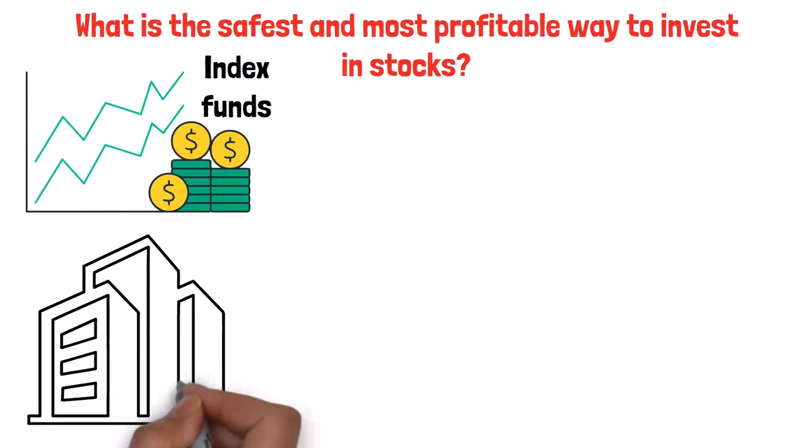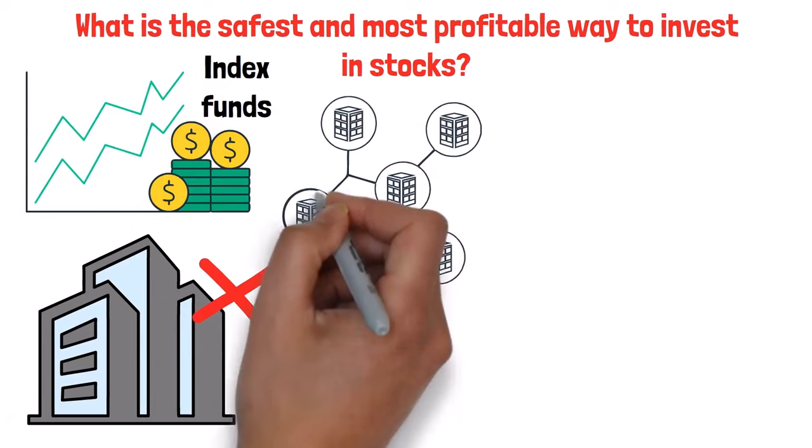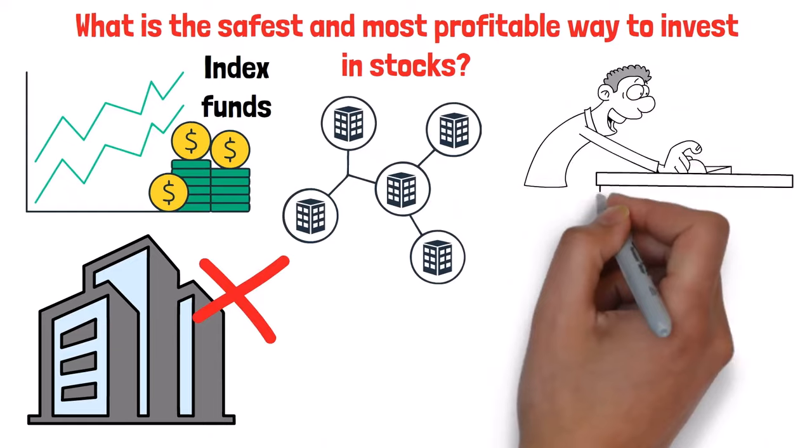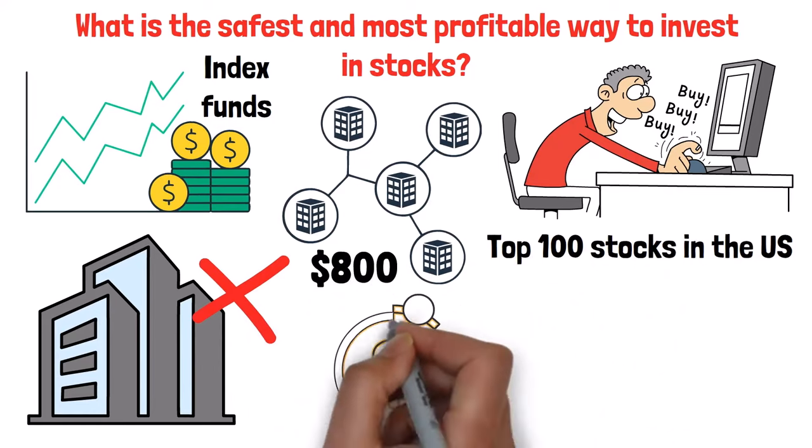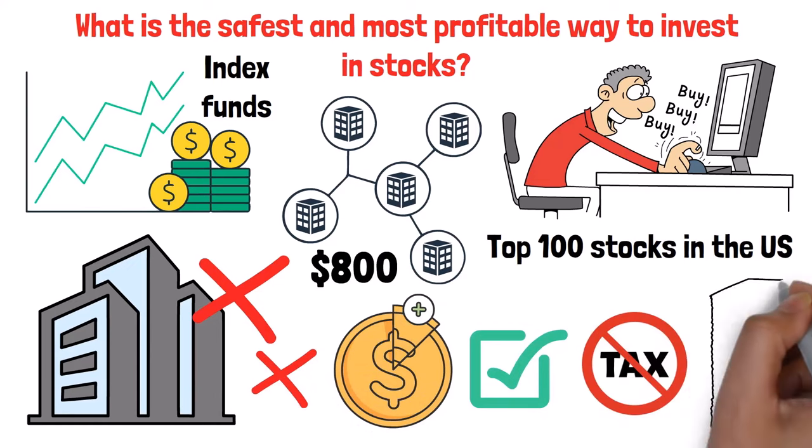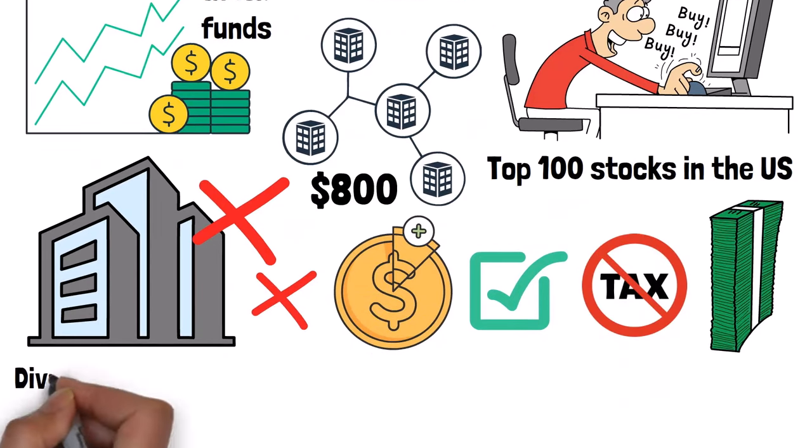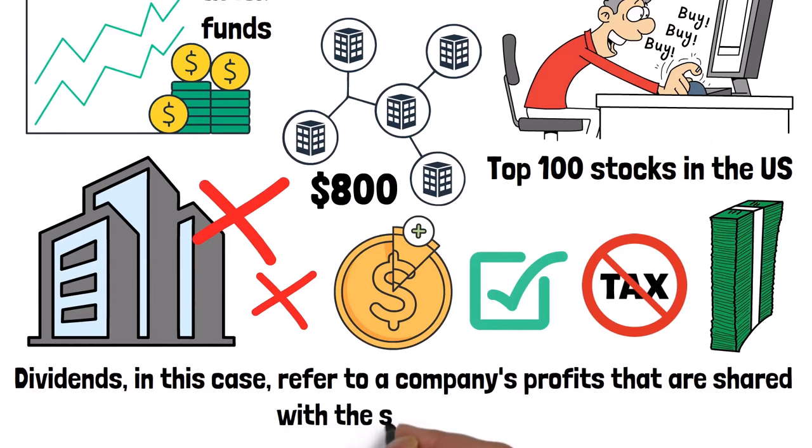With index funds, you don't need a perfect company to invest in. You just invest in a group of companies at once. For instance, you could buy an index fund of the top 100 stocks in the US and put your $800 into it. Some index funds pay dividends, while others do not. So you'll have to confirm this feature just in case you wish to be paid tax-free dividend returns. Dividends, in this case, refer to a company's profits that are shared with the shareholders.